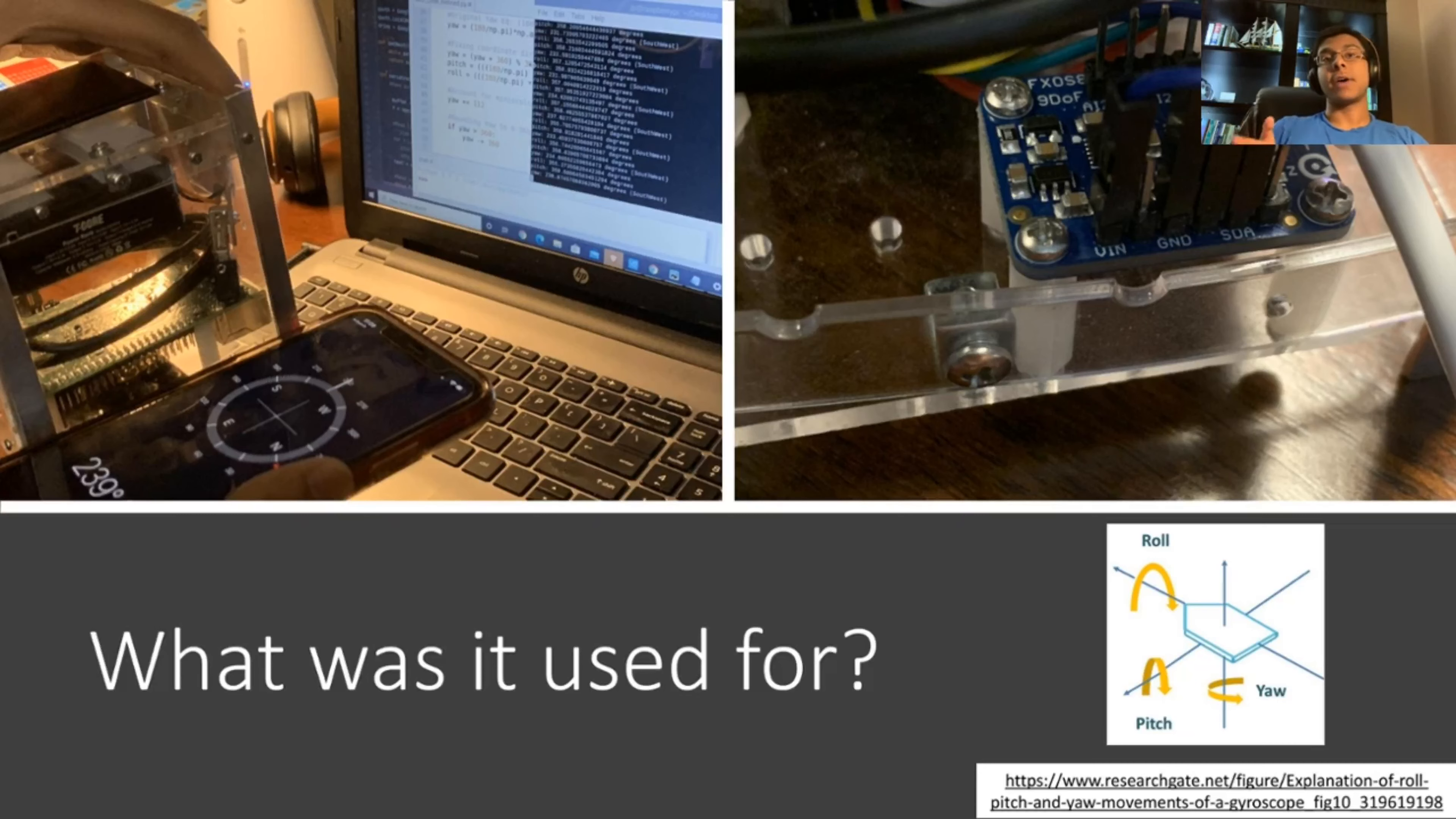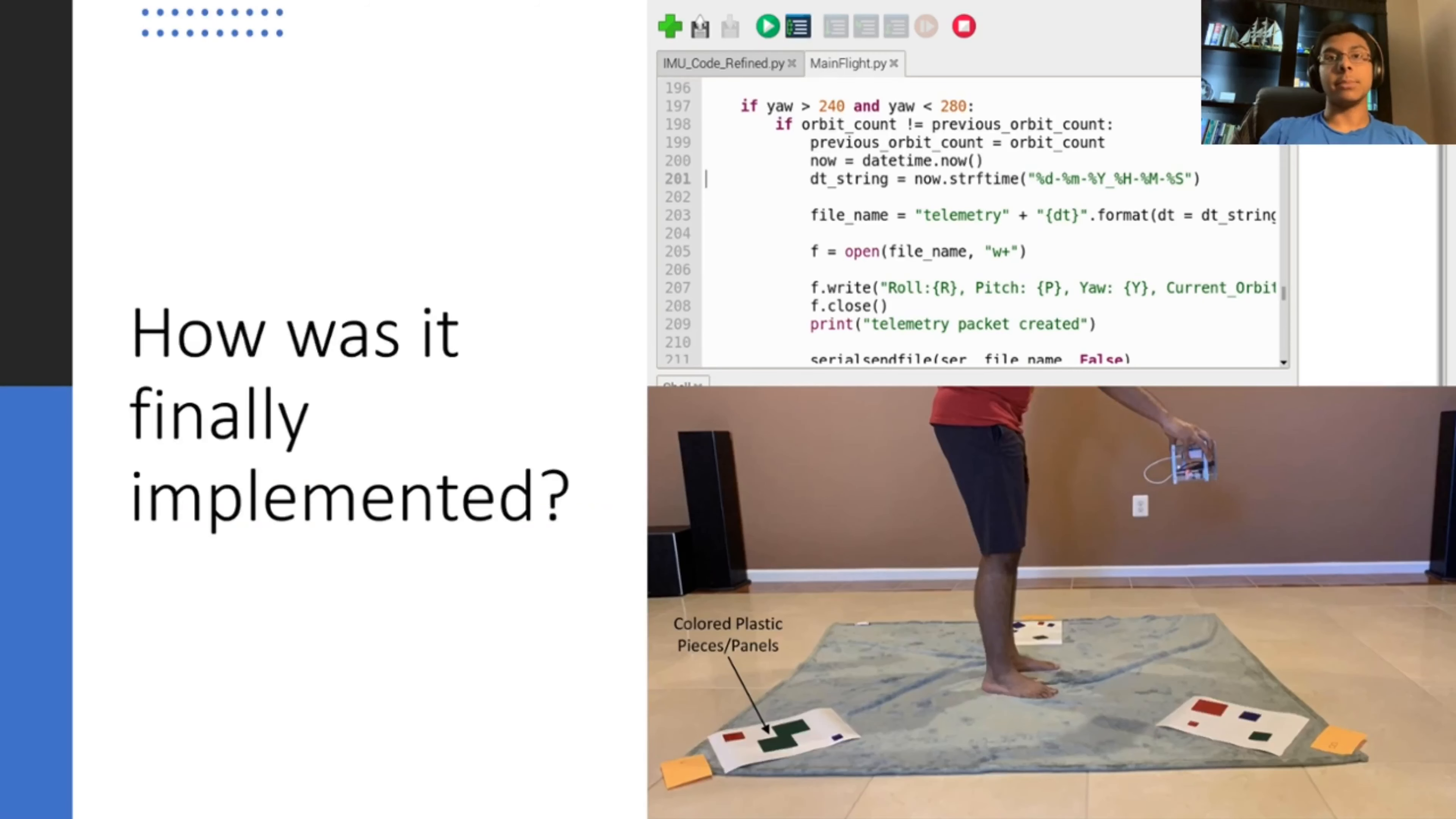Now, the final implementation of our IMU, both on the CubeSat itself and into our flight code, was twofold. Firstly, the CubeSat would store roll, pitch, yaw values from the IMU into a telemetry packet, which would be sent from our CubeSat to a local computer, which is serving as the ground station. And these telemetry packets would give us insight into the position of our CubeSat in its current orbit.